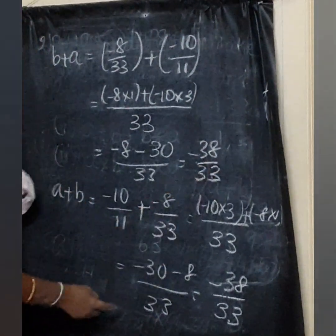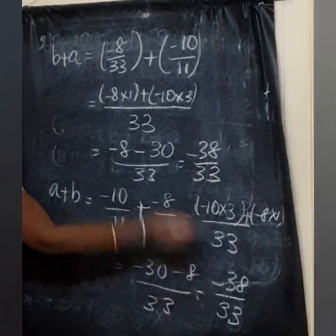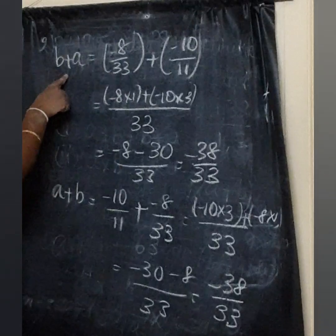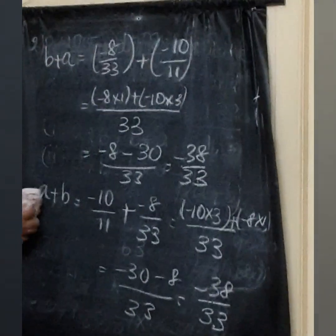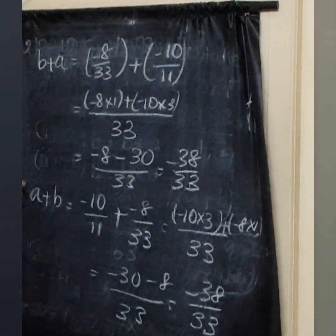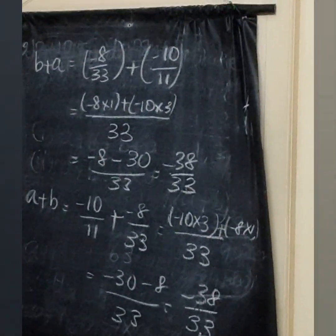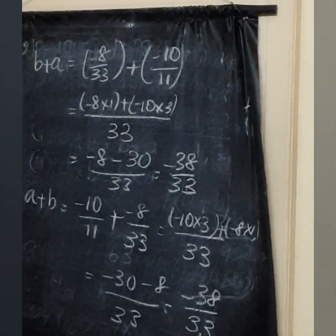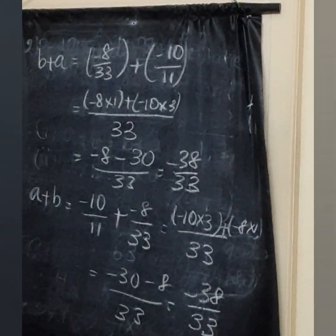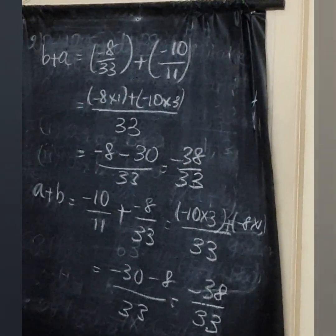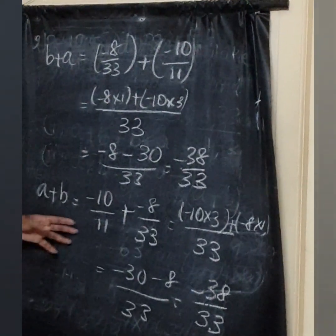A plus B and B plus A are both equal to minus 38 by 33, so it satisfies the commutative property for addition.